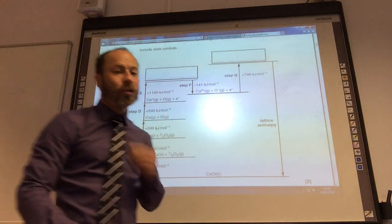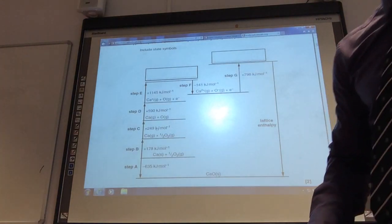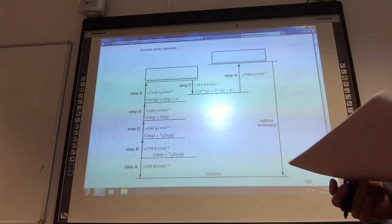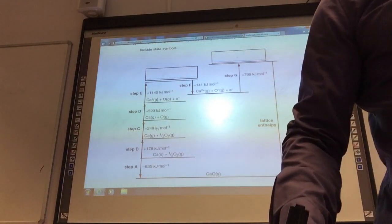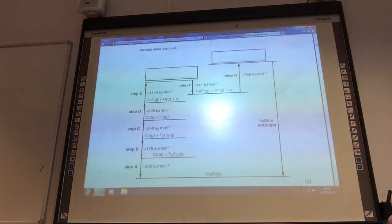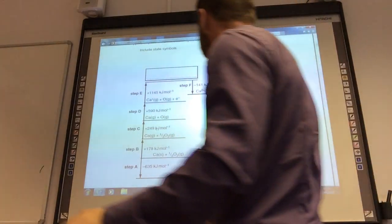Okay, so we're going to go through June 2013, the F325 paper. It starts off at the top with a definition for lattice enthalpy. Lattice enthalpy, as you know, is the enthalpy change that accompanies the formation of one mole of an ionic compound from its gaseous ions. So you've boxed out the definition.